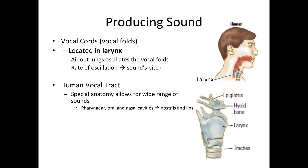The rate of vocal fold oscillations determines the pitch of the sound produced. Vocal fold oscillations are about 100 Hz in adult males and about 500 Hz in a small child. As we covered in the chapter on audition, pitch is related to frequency — so our vocal cords create different frequencies corresponding to higher and lower sounds.